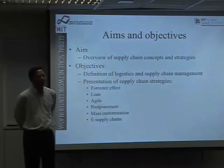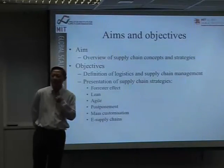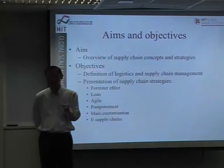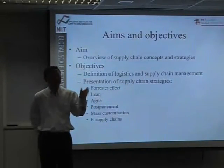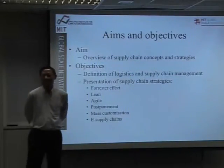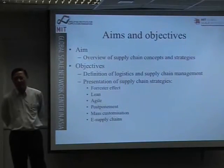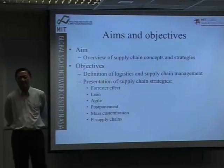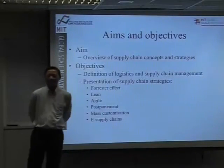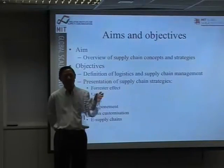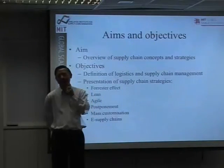One point raised is that logistics is about functions like storage, warehousing, and transportation — these kinds of physical functions. Logistics is movement. Supply chain, on the other hand, is an end-to-end process.